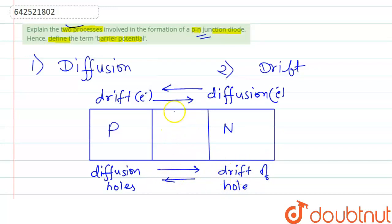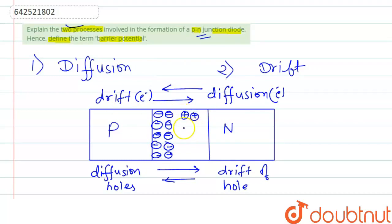So this creates a negative charge near the P side at the junction, due to these two processes — diffusion and drift — and it creates a positive charge near the N side at the junction.